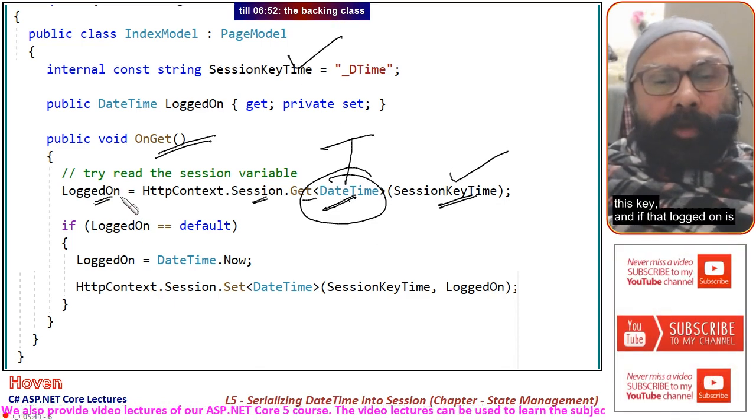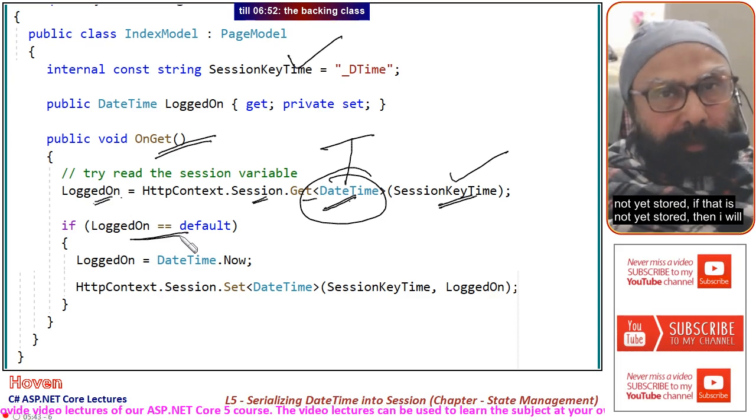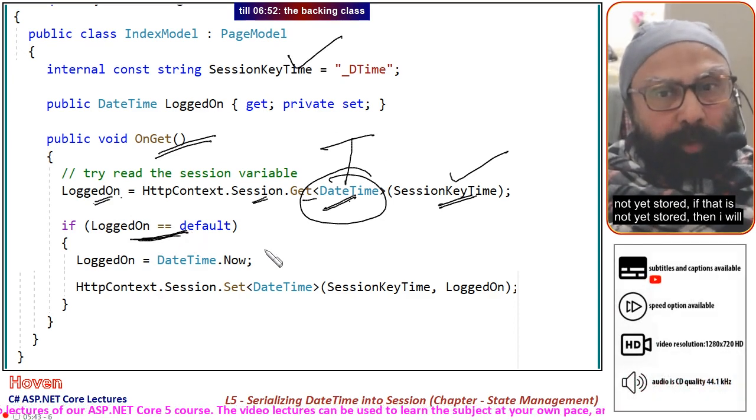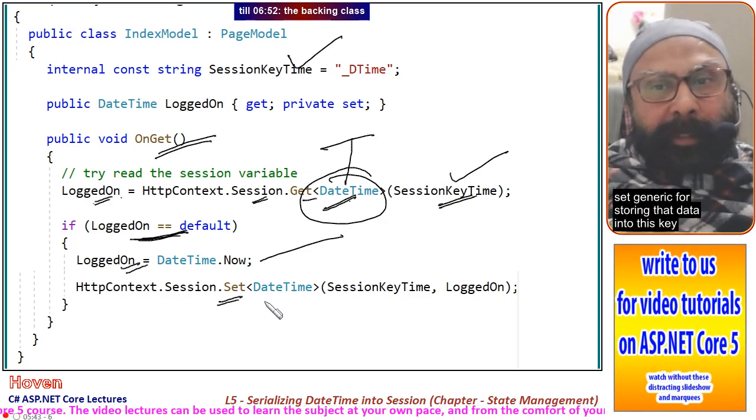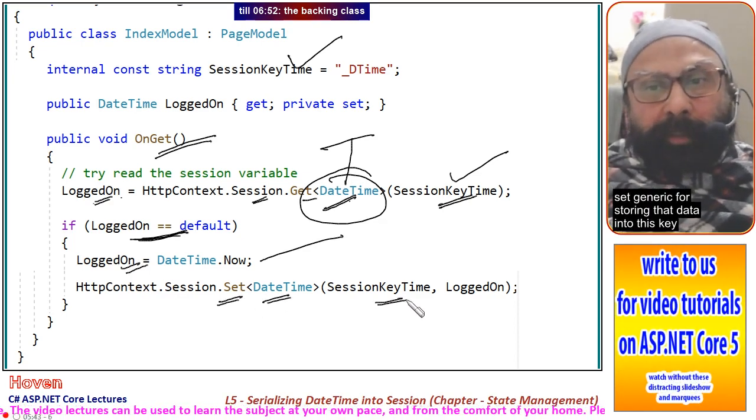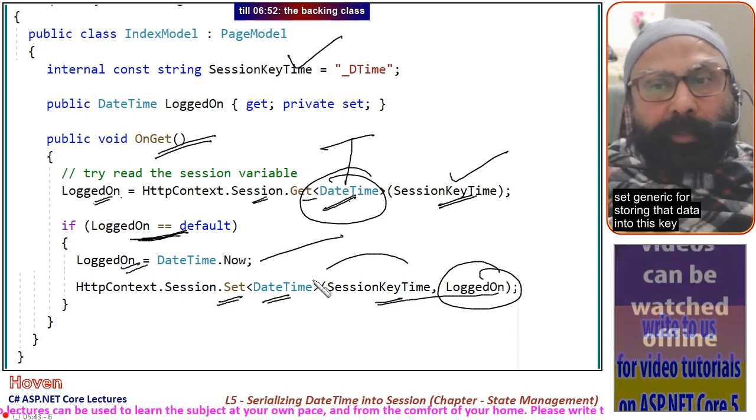And if that LoggedOn is not yet stored, then I will store the current DateTime into that LoggedOn and use the Set generic for storing that data into this key.